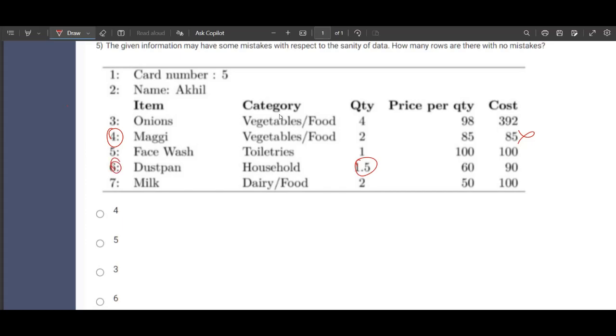Milk, dairy or food, this is perfect. So here the total number of entries are seven. There are two mistakes in this table. That means the correct answer is five.